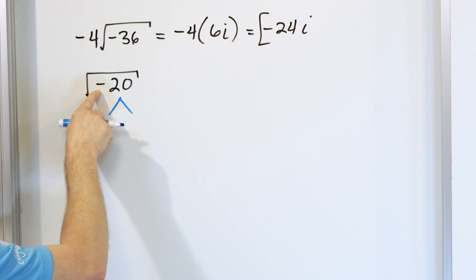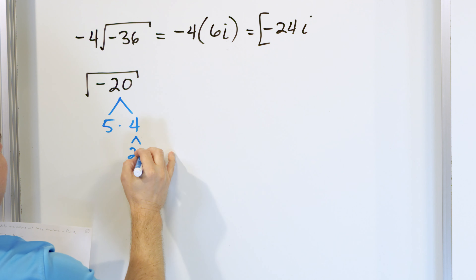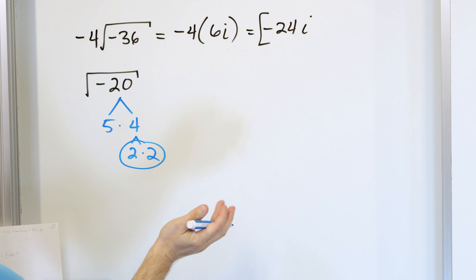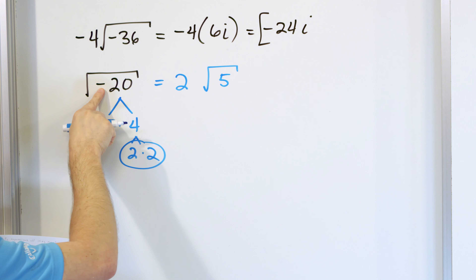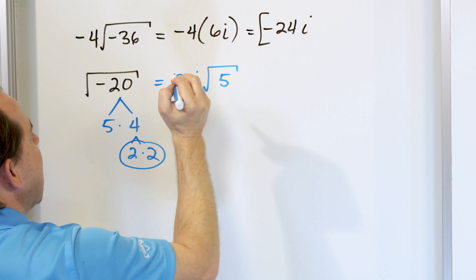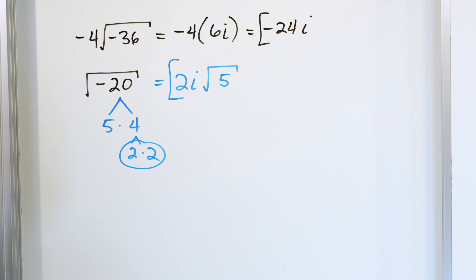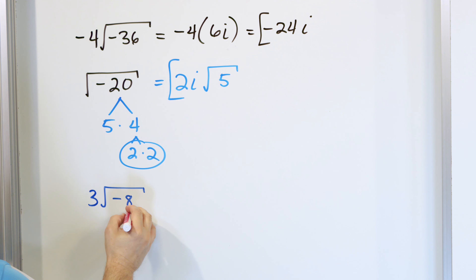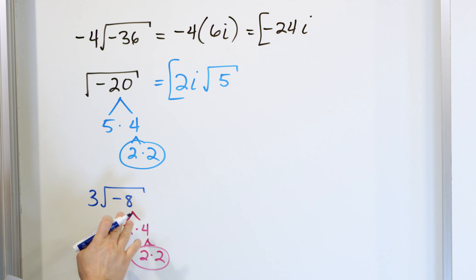What if you have the problem of negative 4 times the square root of negative 36? We treat this step by step. The negative 4 is going to be multiplied by the square root of negative 36. The square root of 36 is 6, and the square root of negative 1 is i, so we get 6i. Then we have negative 4 times 6i. You can multiply imaginary numbers just like any number — multiply the coefficients and treat i like a variable. Negative 4 times 6 is negative 24, so the answer is negative 24i.